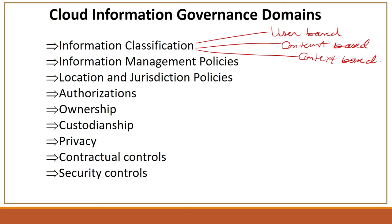Custodianship can lie with the cloud provider, because they are the ones holding the data. Privacy is a sum of regulatory requirements, contractual obligations, and commitments to customers. Contractual controls are the legal tool for extending governance requirements into third parties like cloud providers — whatever obligations you want to put on your provider should be part of the contract. Security controls are the tools to implement data governance; they change significantly in cloud computing depending on where the data is, how it is stored, and its sensitivity.